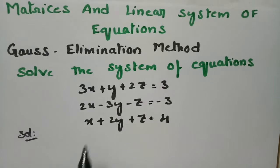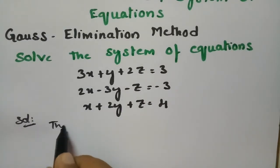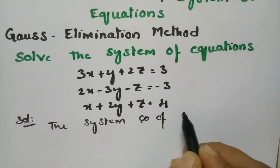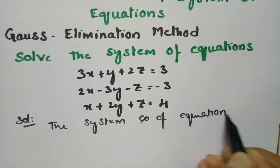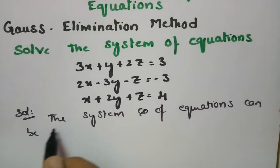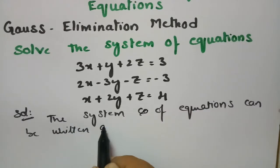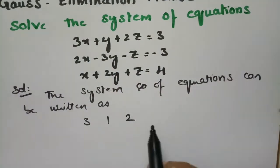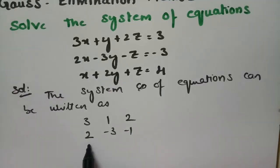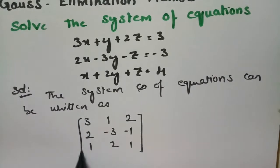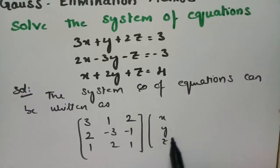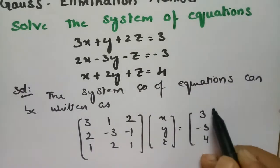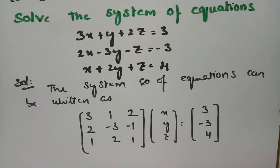The system of equations can be written in matrix form. The coefficient of x is 3, the coefficient of y is 1, and the coefficient of z is 2. The next row is 2, minus 3, minus 1, and then 1, 2, 1. So this gives us Ax = b, where x, y, z equals the column 3, 3, minus 3, and 4.